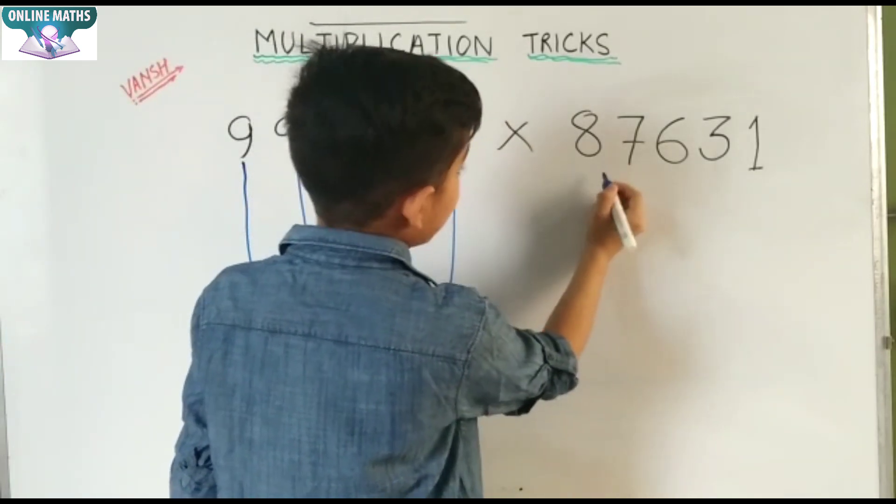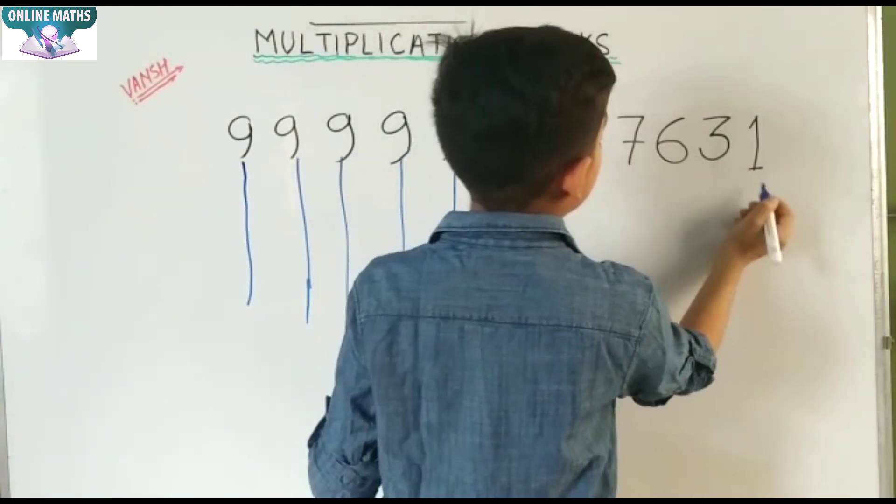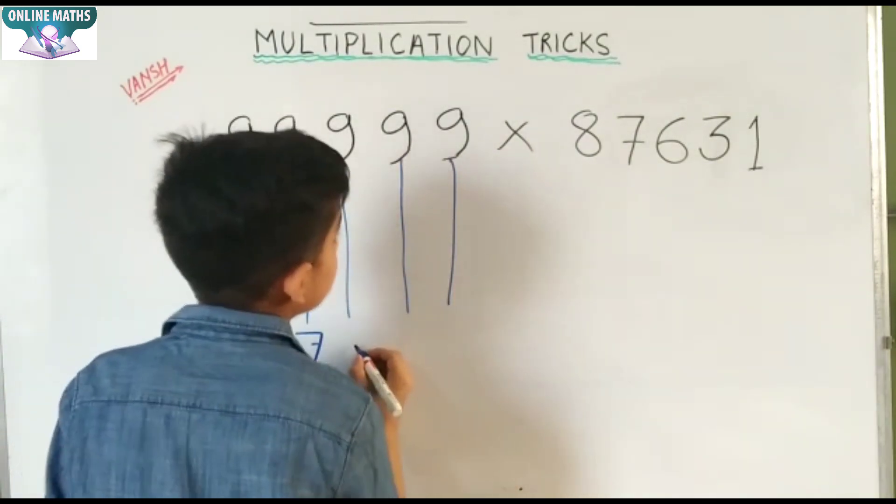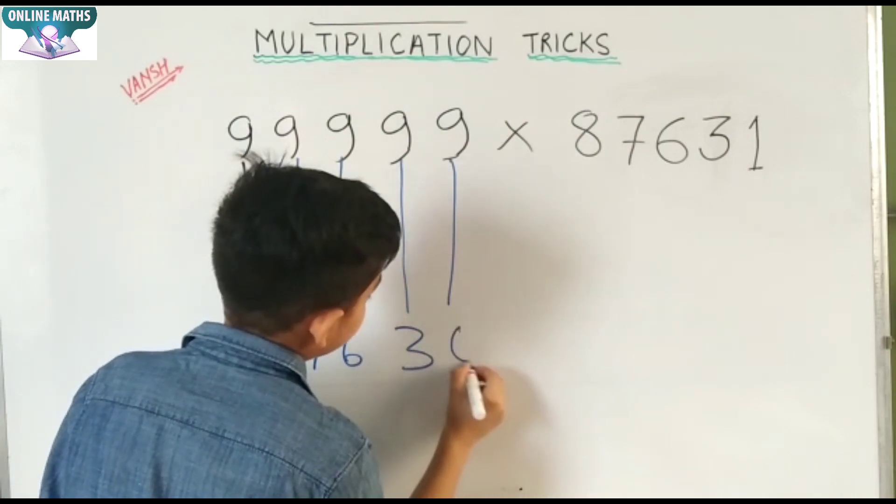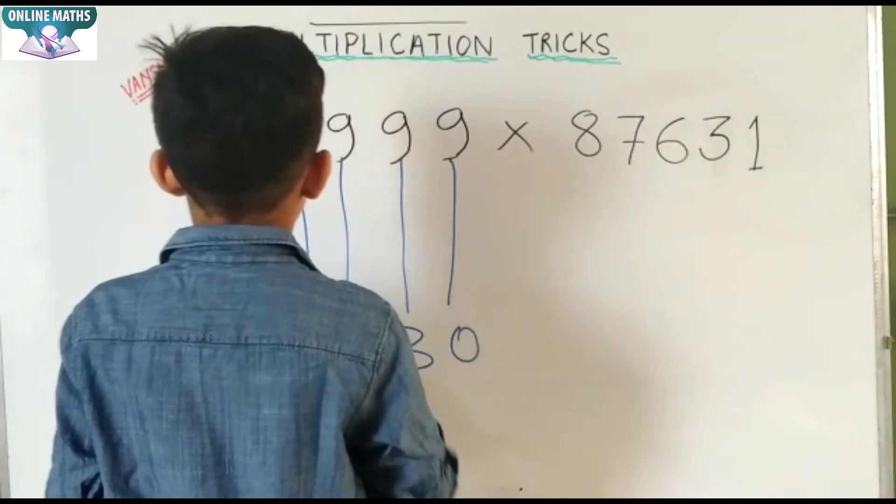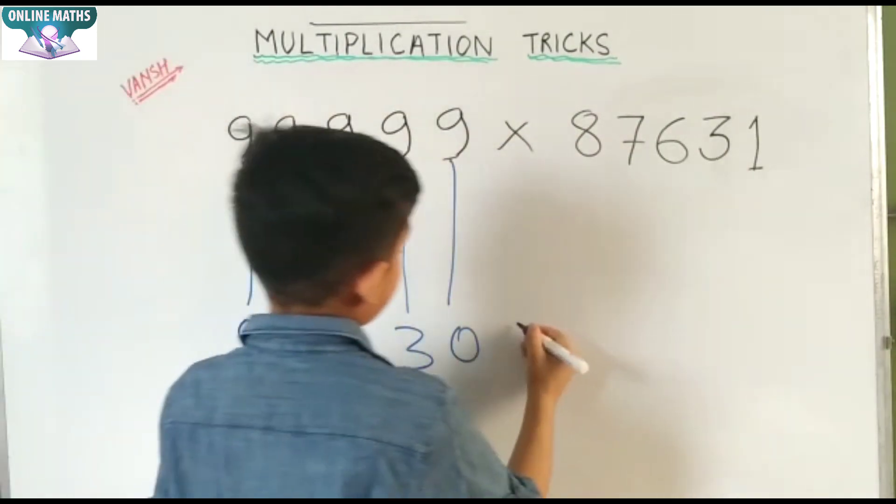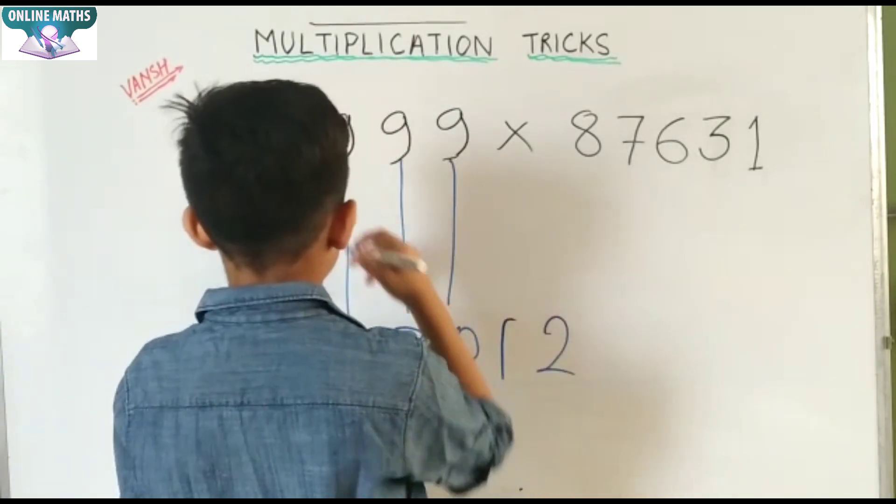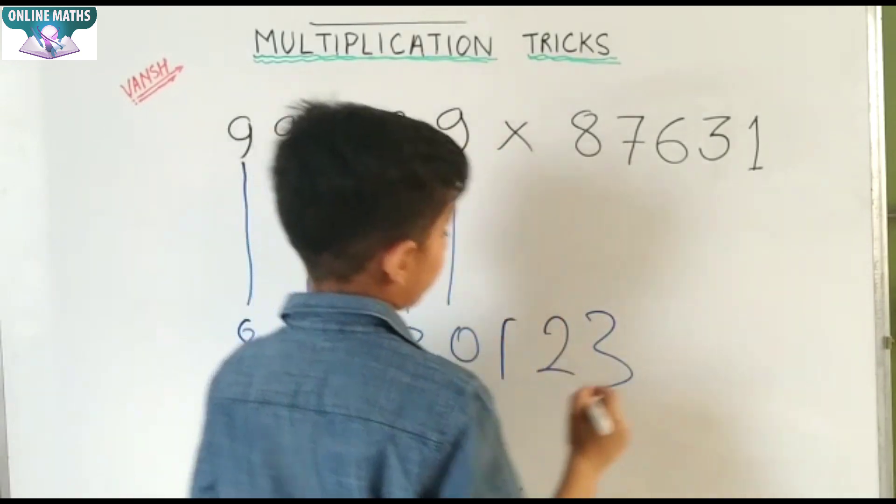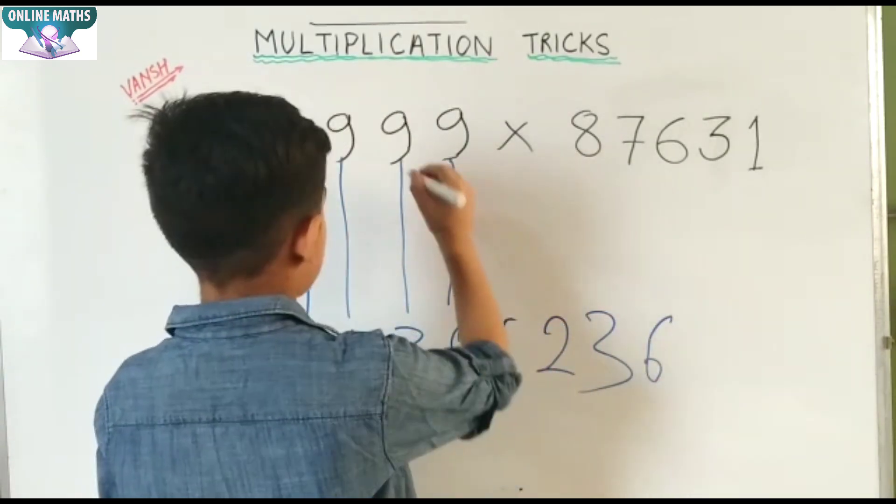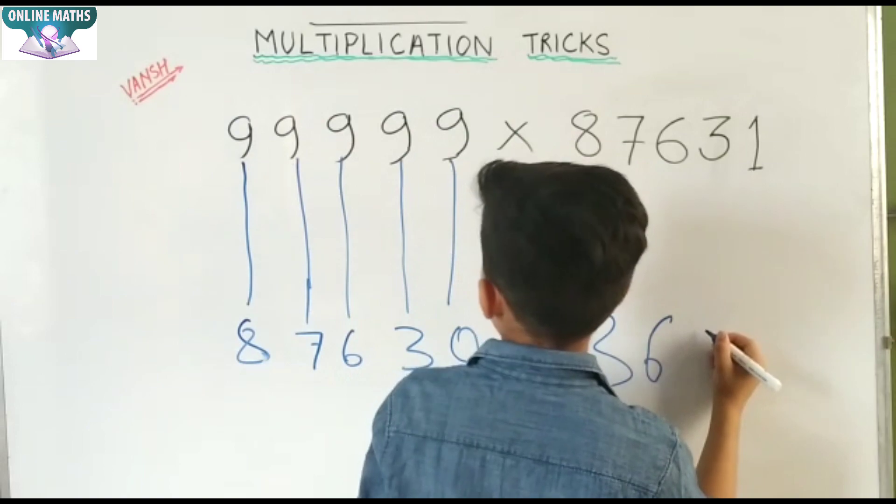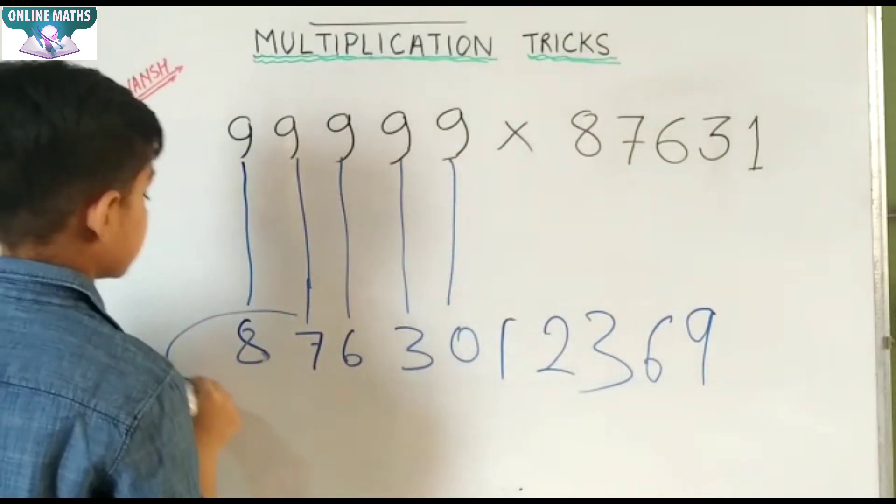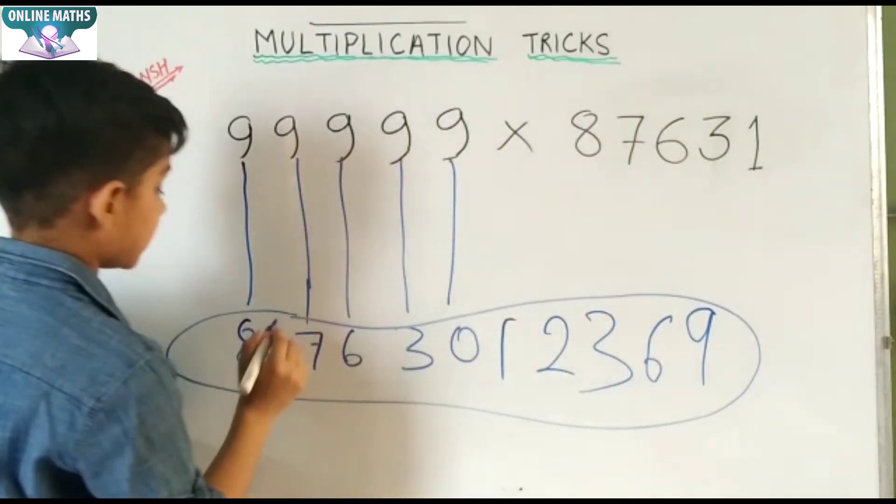One less number of 87631 is 87630. 9 minus 8 is 1, 9 minus 7 is 2, 9 minus 6 is 3, 9 minus 3 is 6, 9 minus 0 is 9. Our answer is this.